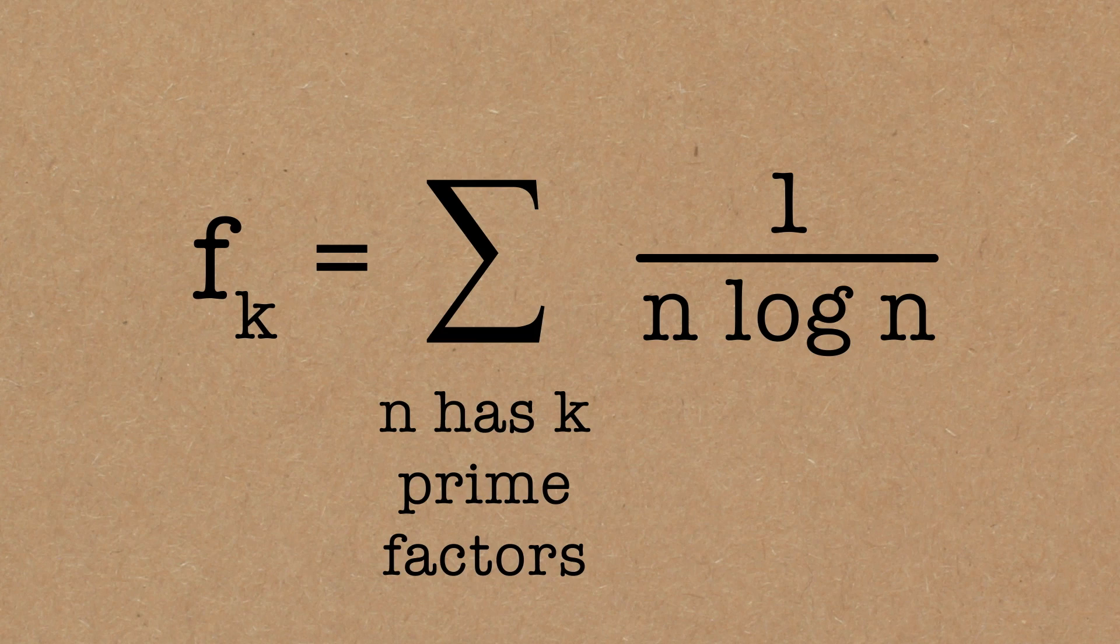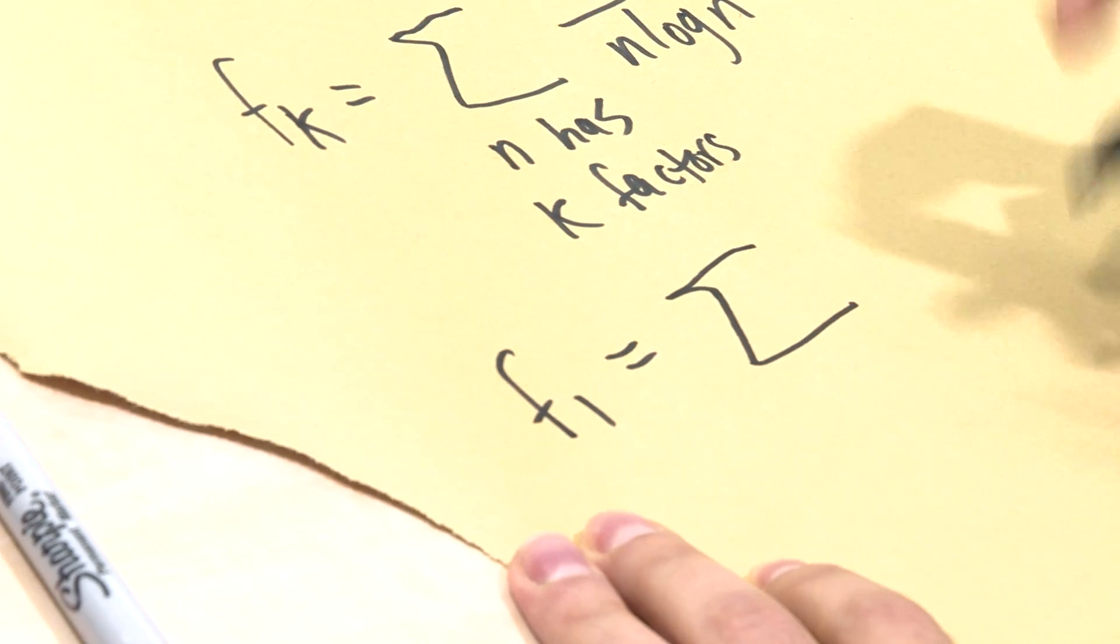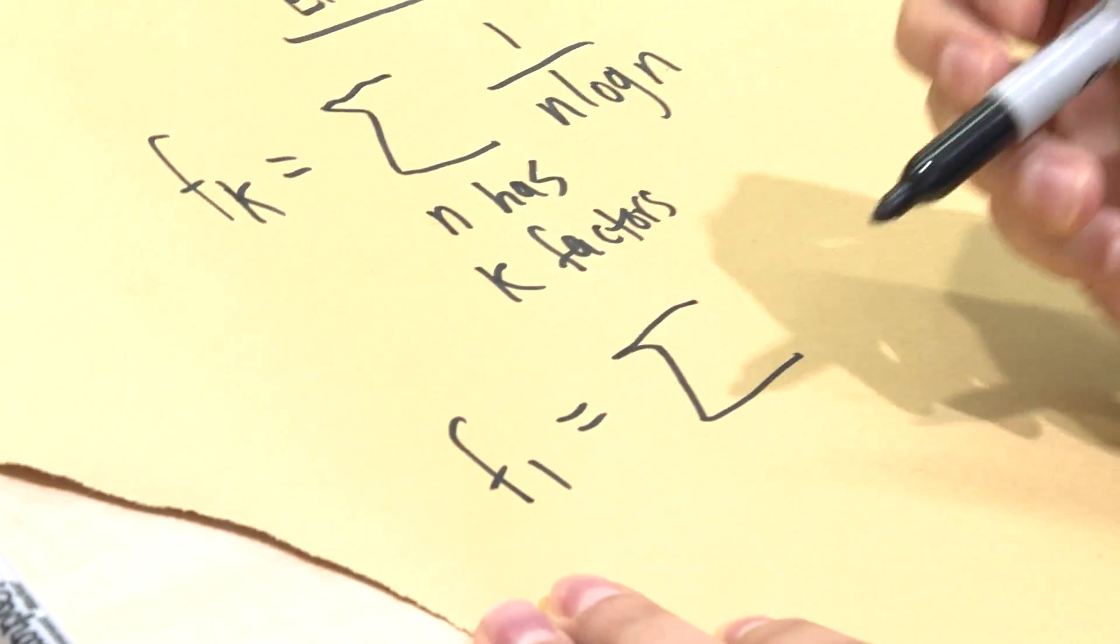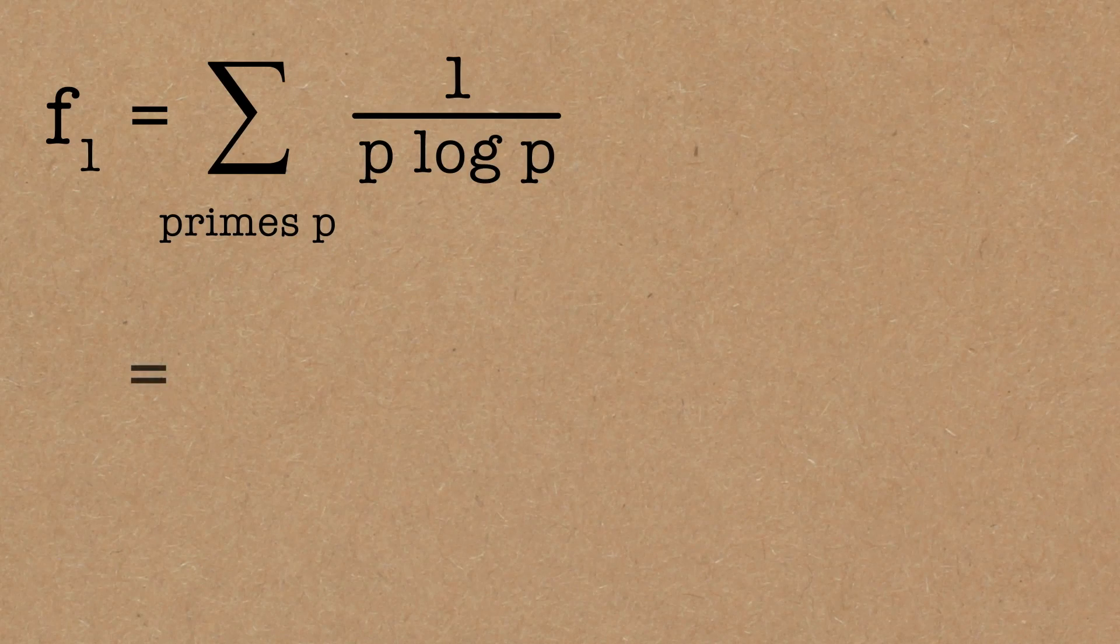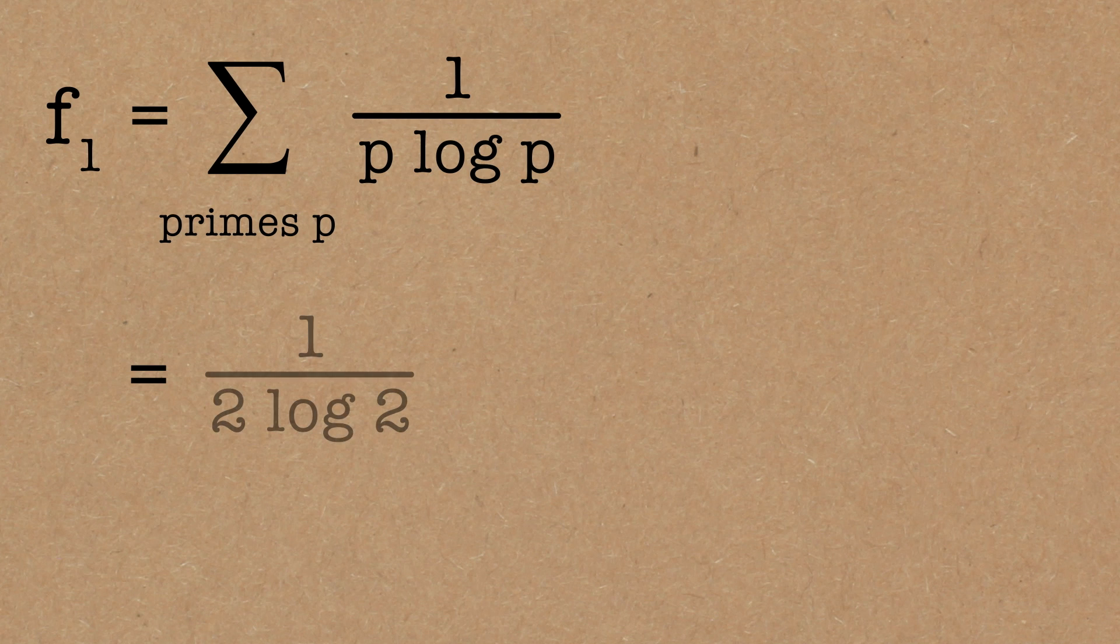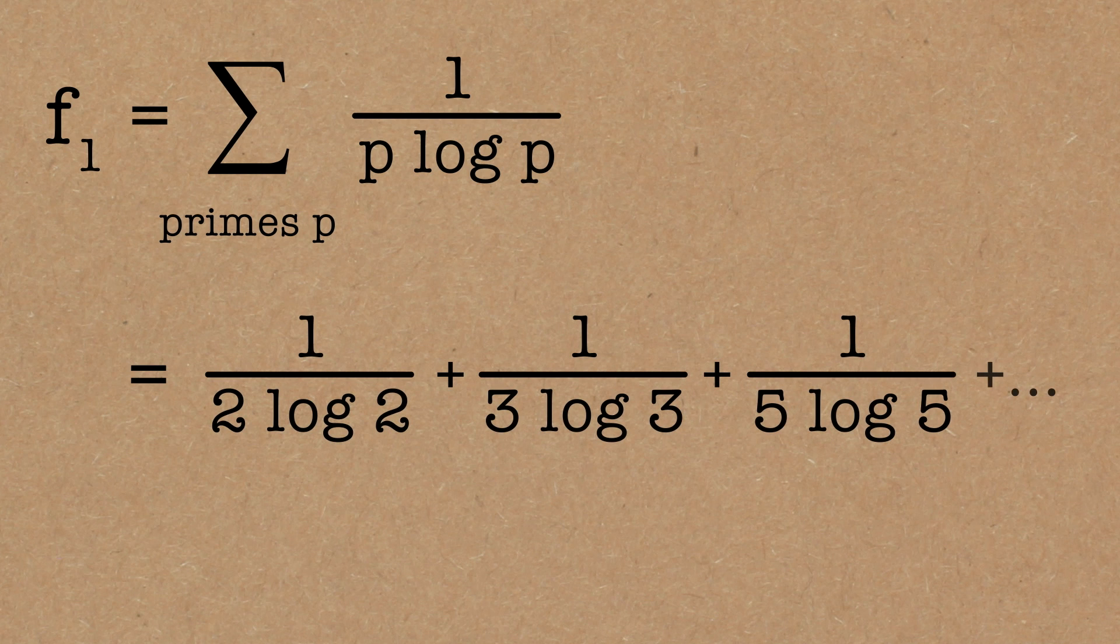In this case, we're looking at the fingerprint numbers. They're defined as an infinite series, one fingerprint for each k, as the infinite series of 1 over n log n, ranging over numbers that have exactly k prime factors. For example, the first fingerprint number, f1, is the sum over all numbers that have exactly one prime factor, so in other words, the prime numbers themselves. Sum over primes p of 1 over p log p. This series turns out to converge to about 1.636.